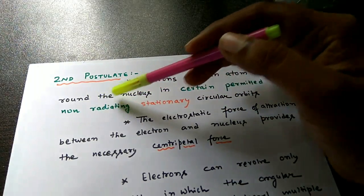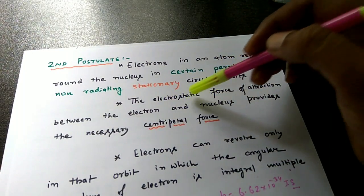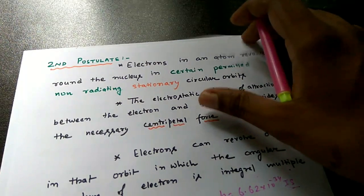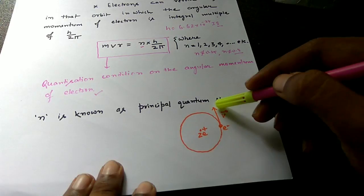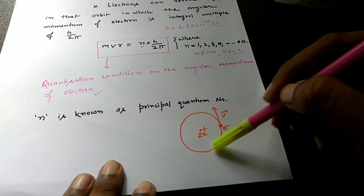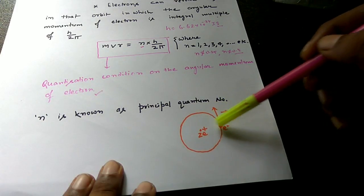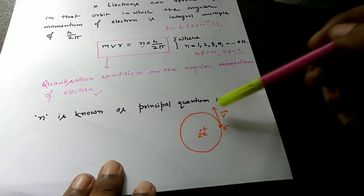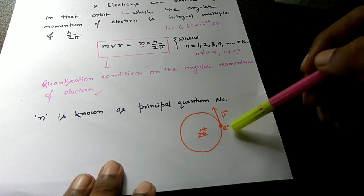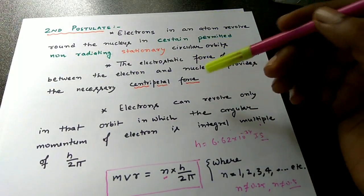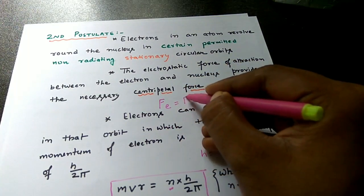The term 'non-radiating' is mentioned here. If an electron is moving in a circular orbit, there must be a centripetal force — if it is moving in a circular path, the electron has a velocity v in the tangential direction. This centripetal force is provided by the electrostatic force of attraction between the two unlike charges: the positive charge Ze at the center and the negative electron charge at any point in the orbit. So the electrostatic force is equal to the centripetal force.